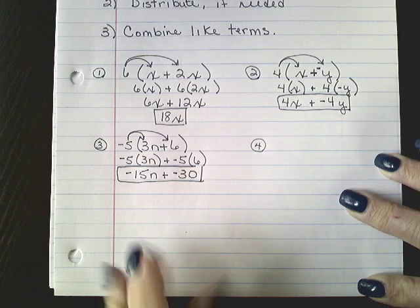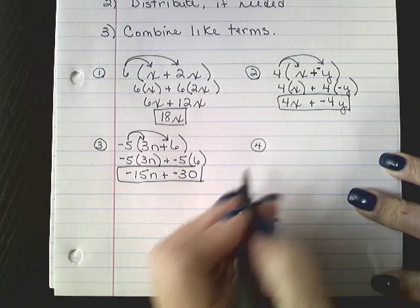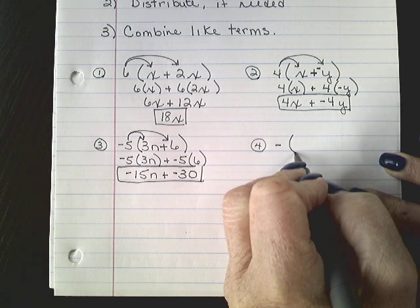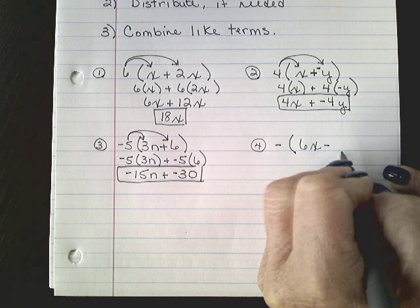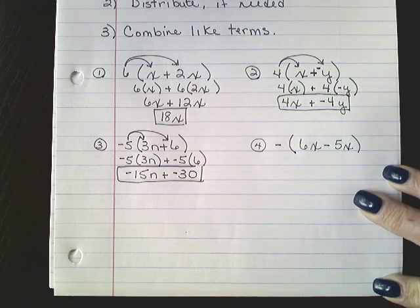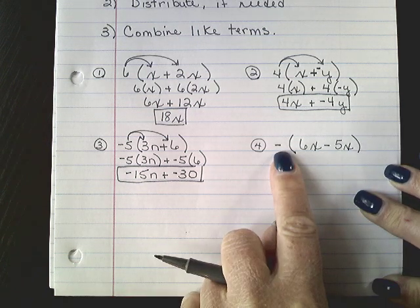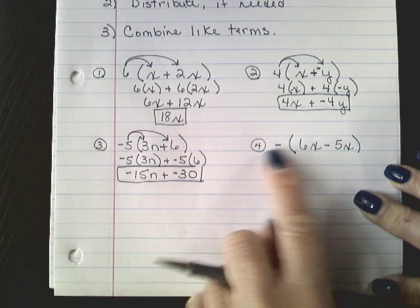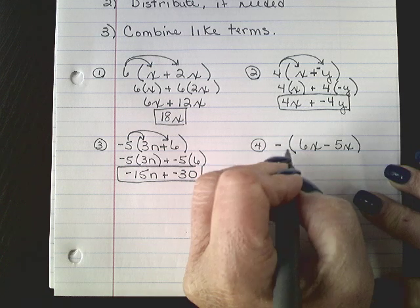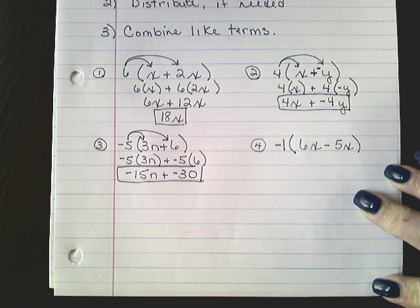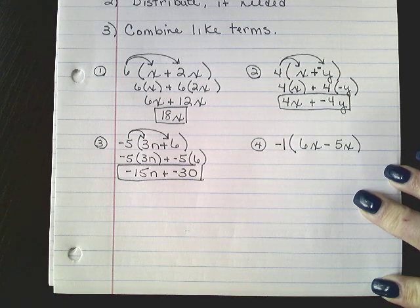Fourth example. We have a negative, and then we have 6x minus 5x. Now when you see a negative sign sitting outside of that parentheses, it is automatically attached to the number 1. So I want you to put that number 1 in front of the parentheses.